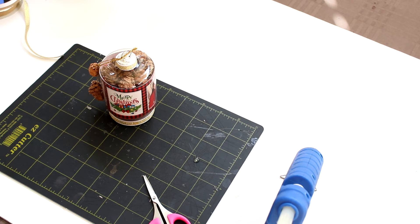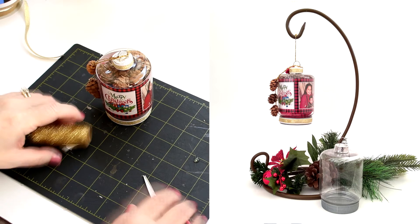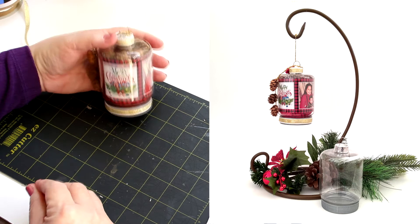And then what I would do is a final touch. I would just take some more of that gold thread that I had and I'll make a loop to go through here so that that can hang on a tree. So that's how easy it is to put one of these together.